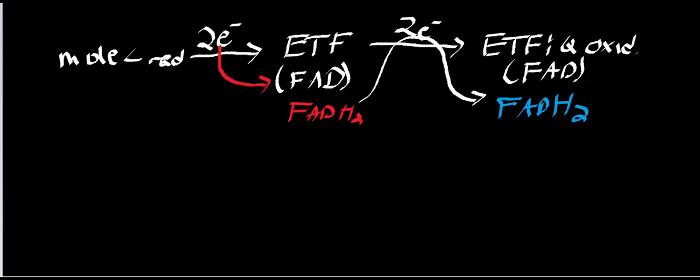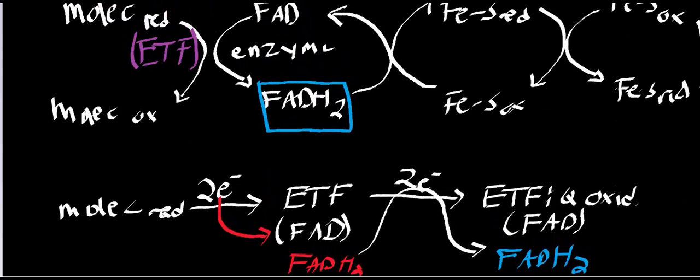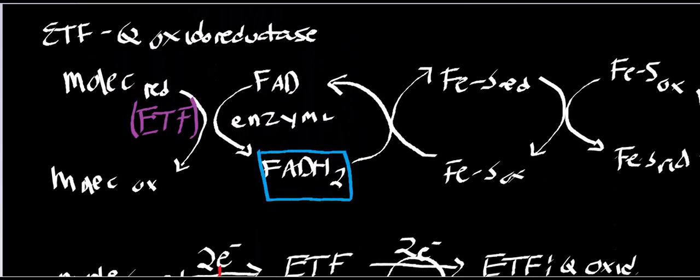In my opinion — and this is just my opinion, not fact — I think this should really be called complex 2, because it's more important in getting most of the FADH2 into the electron transport chain, at least in terms of the number of enzymes, since there are many FADH2-dependent enzymes. This is ultimately how you get these electrons into the respiratory chain.